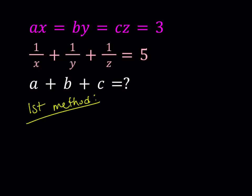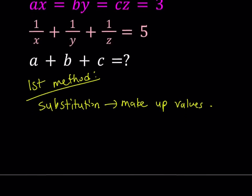My first method involves substitution. But when I say substitution, what am I going to substitute, right? Well, here's the thing. I'm going to make up some values and substitute them. Alright. Since we have some freedom, we can't really choose all of A, B, C or all of X, Y, Z. But we can choose some of them. So here's what I'm going to do.